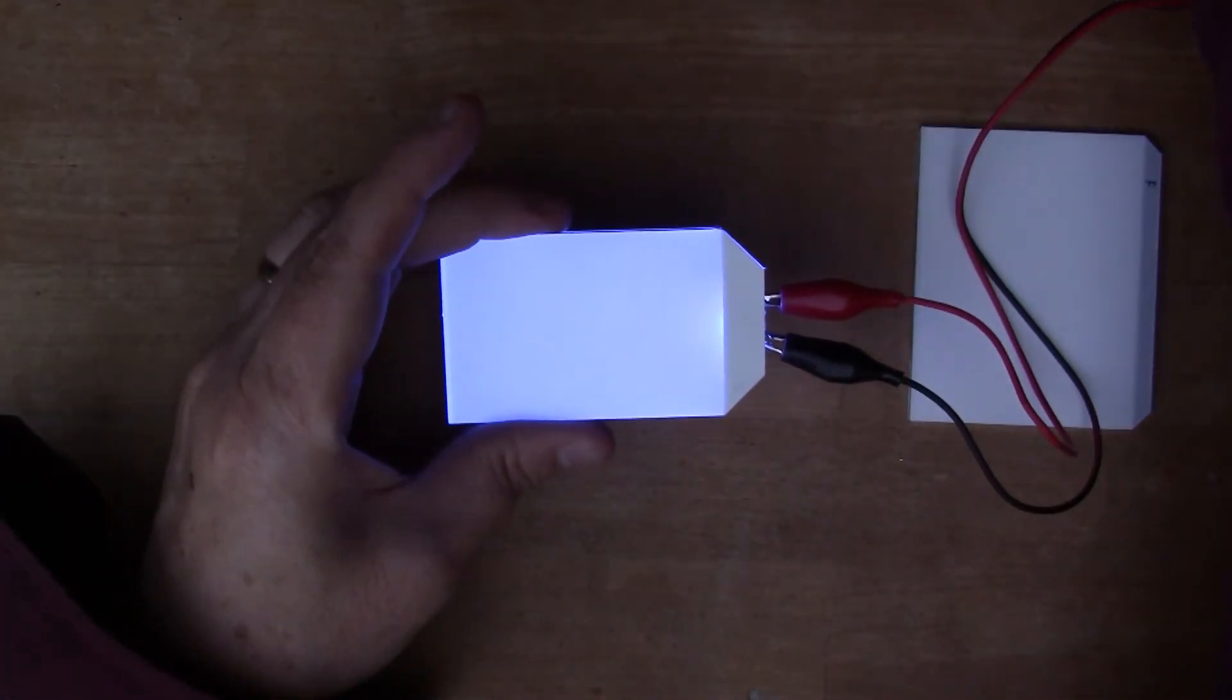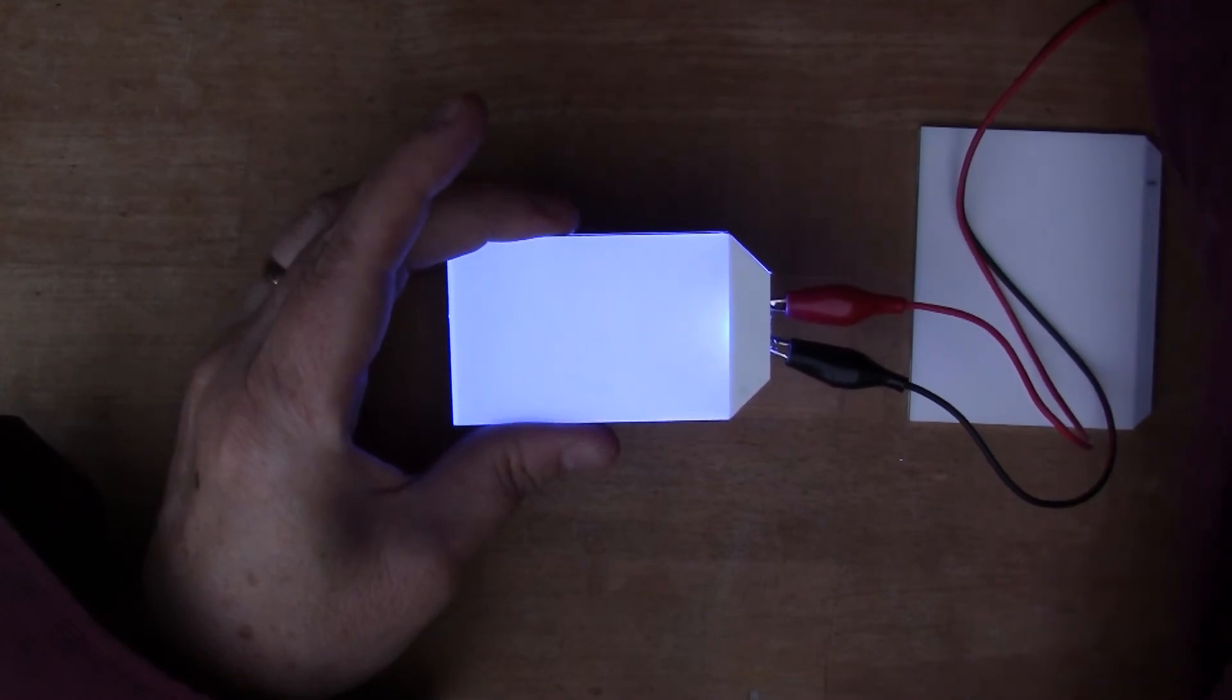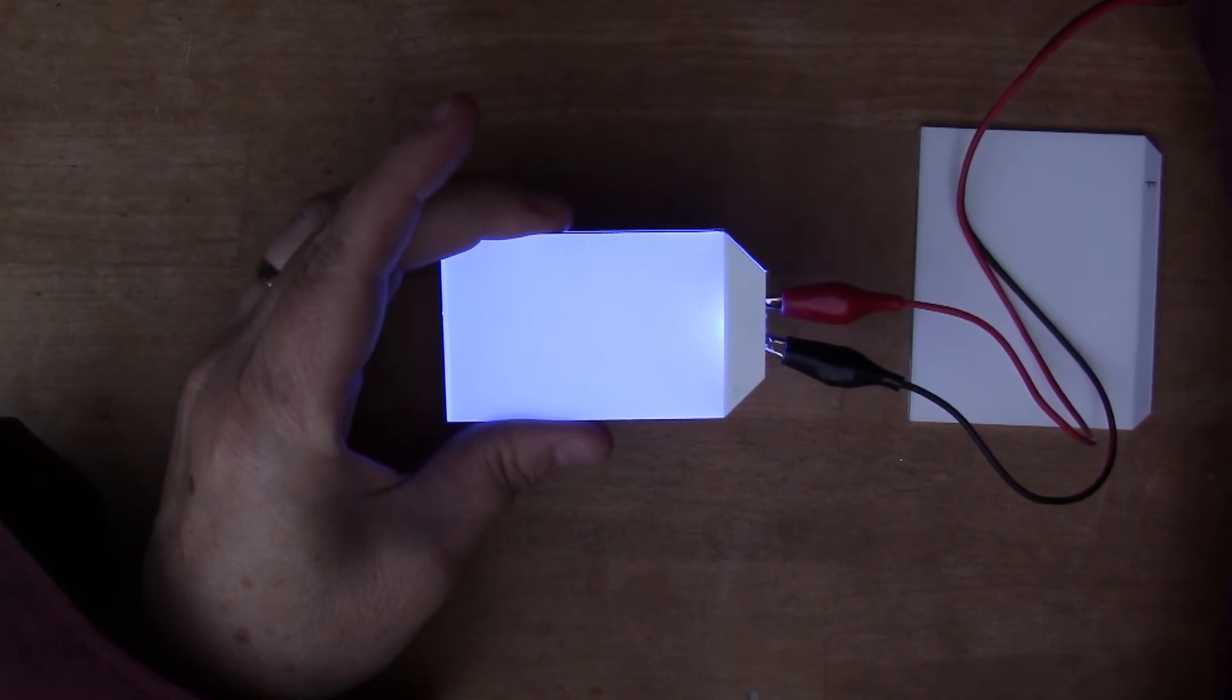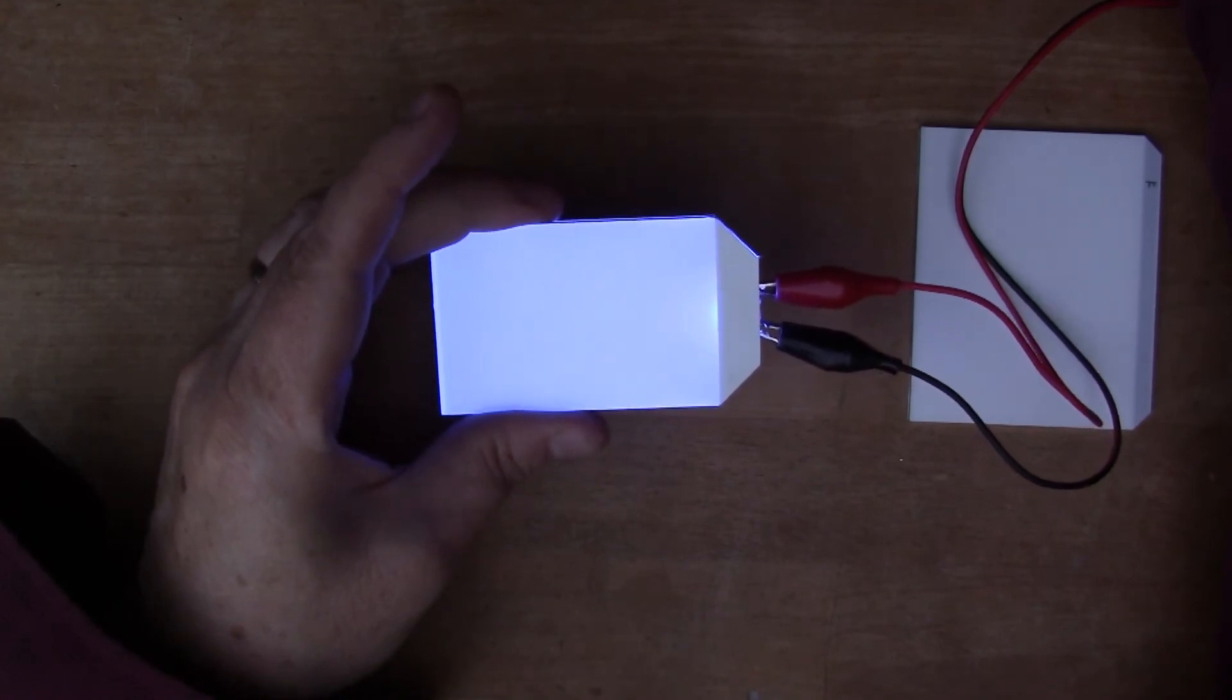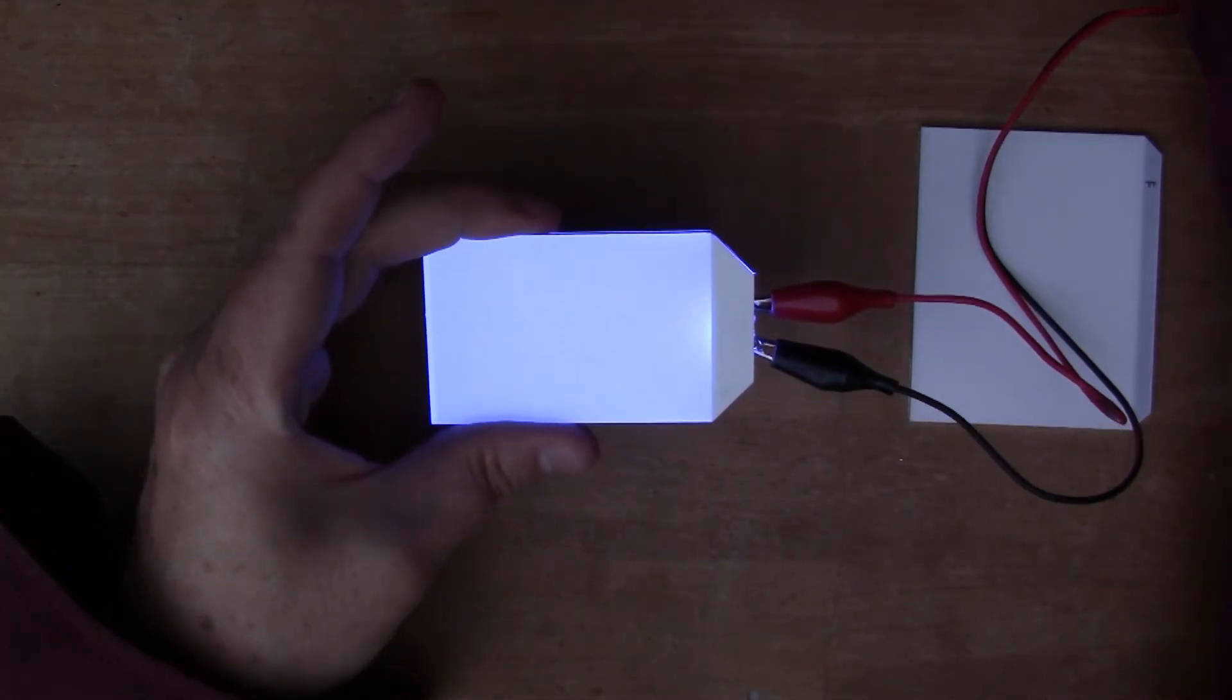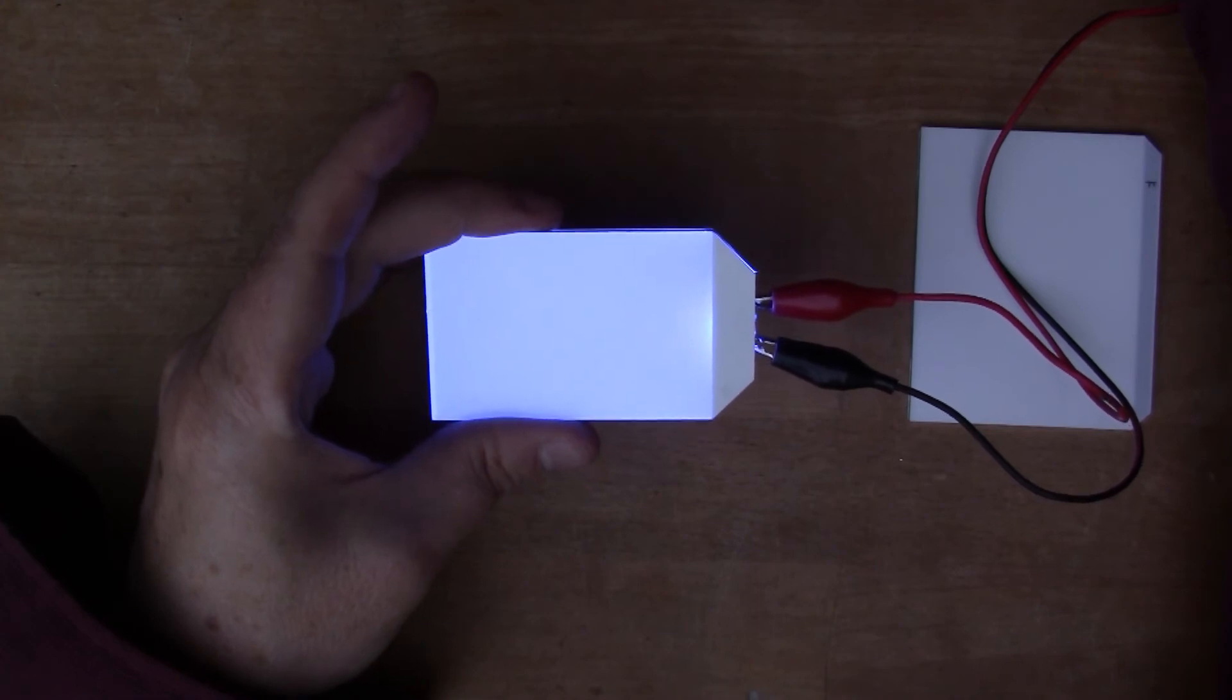But it's not current limiting, so I might just wind the current up a bit, see what happens. That's 30 milliamps. Doesn't seem to be getting much brighter though. I don't want to blow it up, so I won't wind it all the way up.